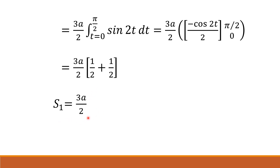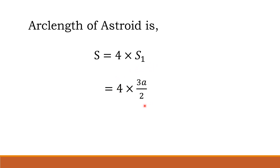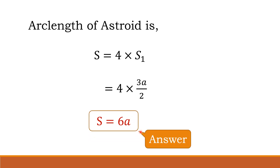This is the arc length of the branch of the asteroid in the first quadrant. Hence, the total arc length of the asteroid is s equal to 4 times s1, which is 4 times 3a/2. After simplifying, the total arc length of the asteroid is equal to 6a, which is the required answer.